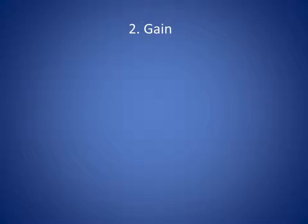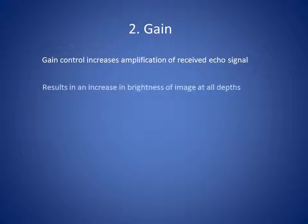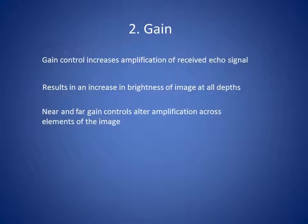The second control used frequently for vascular access is the gain control. The gain control increases or decreases the amplification of the received echo signal, resulting in an increase or decrease in brightness of the image at all depths. There is an overall gain control and near and far gain controls which alter the amplification across elements of the image only.